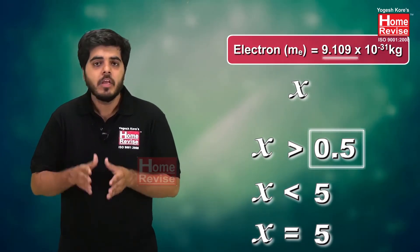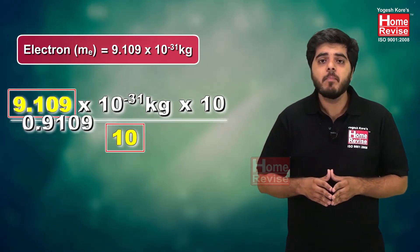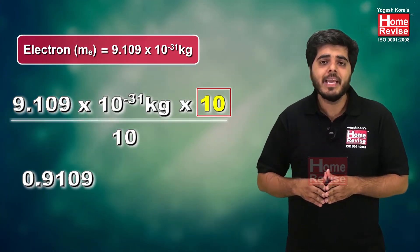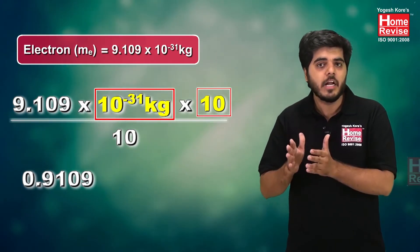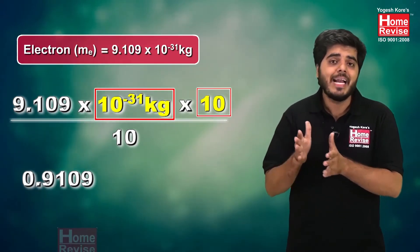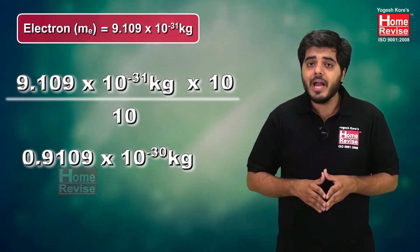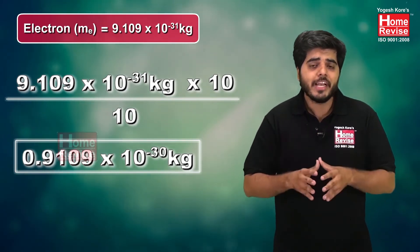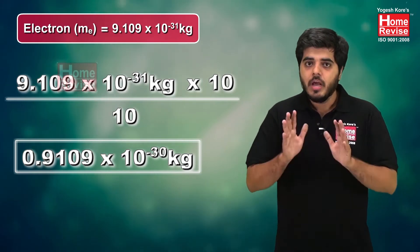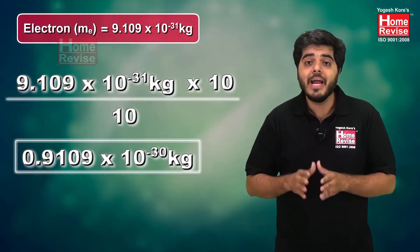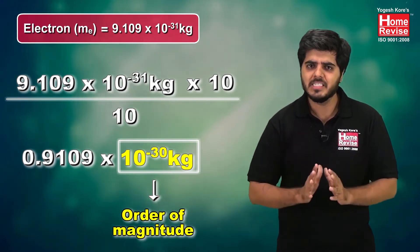So I need to bring it into range. To do that, I multiply by 10 and divide by 10. Dividing 9.1 by 10 gives 0.91, and multiplying 10⁻³¹ by 10 gives 10⁻³¹⁺¹ = 10⁻³⁰. So the value becomes 0.91 × 10⁻³⁰. Check the range: 0.91 is greater than 0.5 and less than 5 — it is in range. So the order of magnitude is 10⁻³⁰.